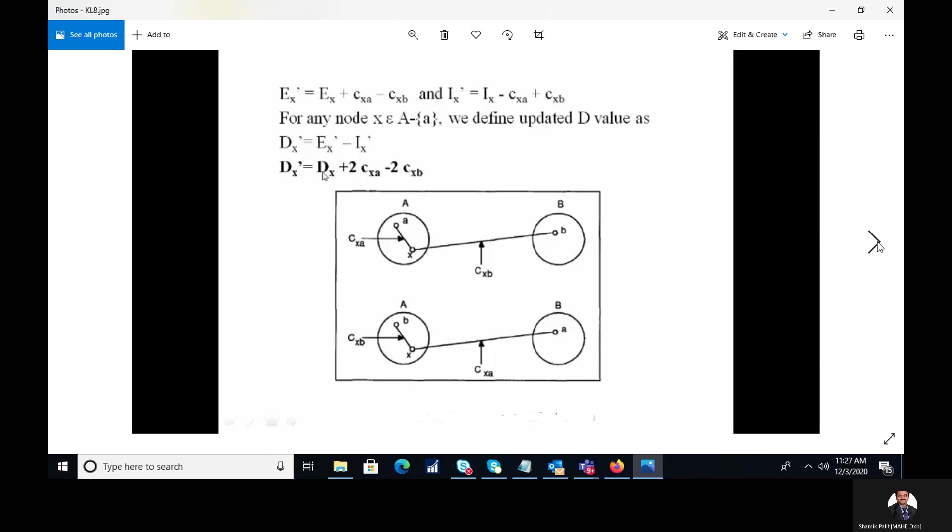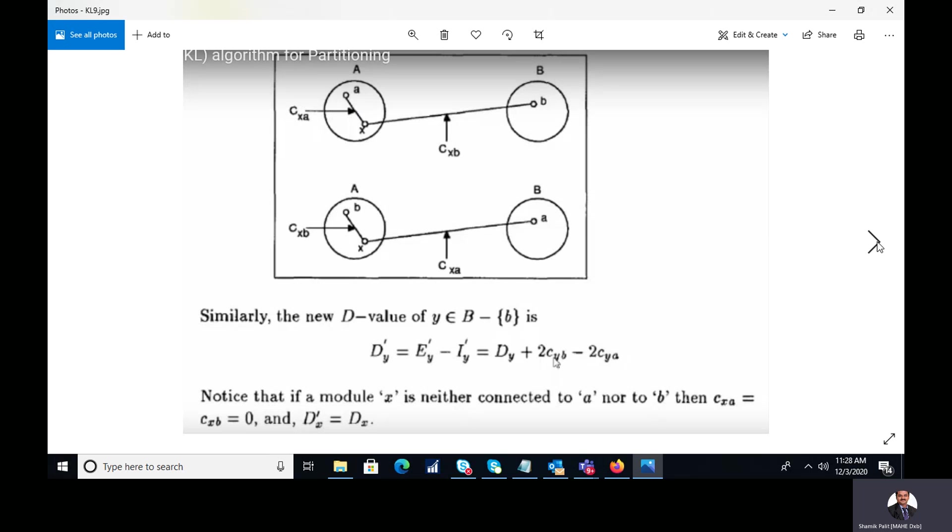Dx' equal to the existing Dx, that is existing profit, plus 2Cxa minus 2Cxb. So this is how we can calculate the value of the updated Dx in the following format as per lemma 2.